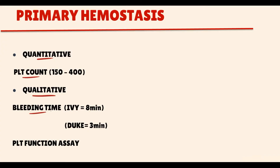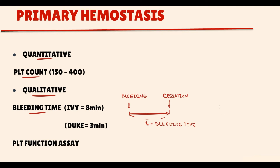The first value for qualitative assessment is bleeding time. Basically, we create a site of bleeding and then time the cessation of bleeding. This test can be performed by two methods: the Ivy method and the Duke method. For the Ivy method, bleeding has to stop in 8 minutes; for the Duke method, in 3 minutes. Anything longer than that is considered abnormal. In some countries this method is considered barbaric, so as an alternative they use the more modern platelet function assay. Both tests provide assessment of qualitative platelet abnormalities.